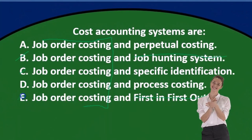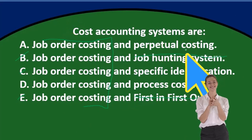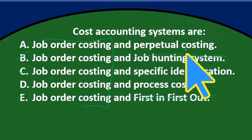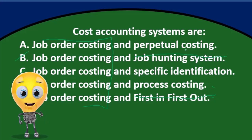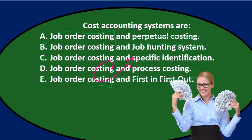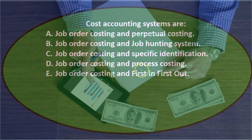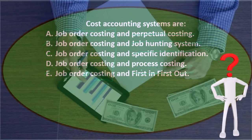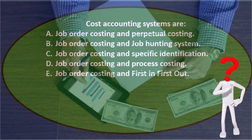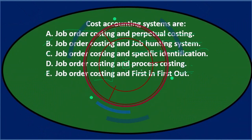So going back through: perpetual costing relates to the perpetual versus periodic distinction, which is typically a merchandising company concept. Specific identification is how we track inventory in merchandising. That leaves process costing — so the answer is D: job order costing and process costing. Those are the two systems we're always contrasting. When working on one, we're often asked to compare it to the other, with the key difference being the differentiation of inventory and other resulting differences.